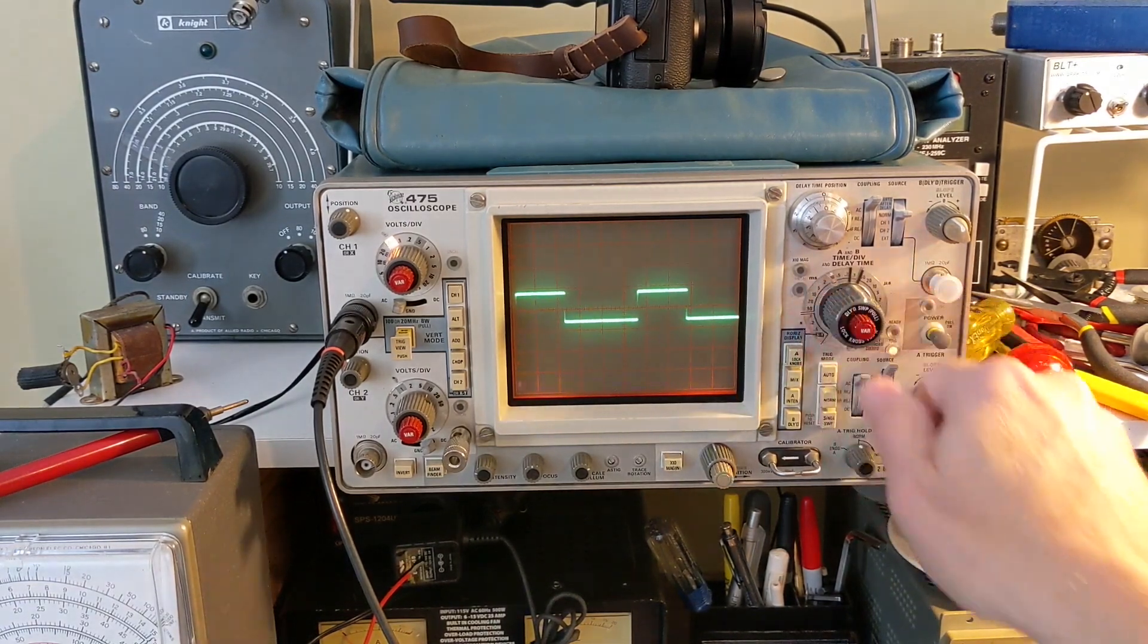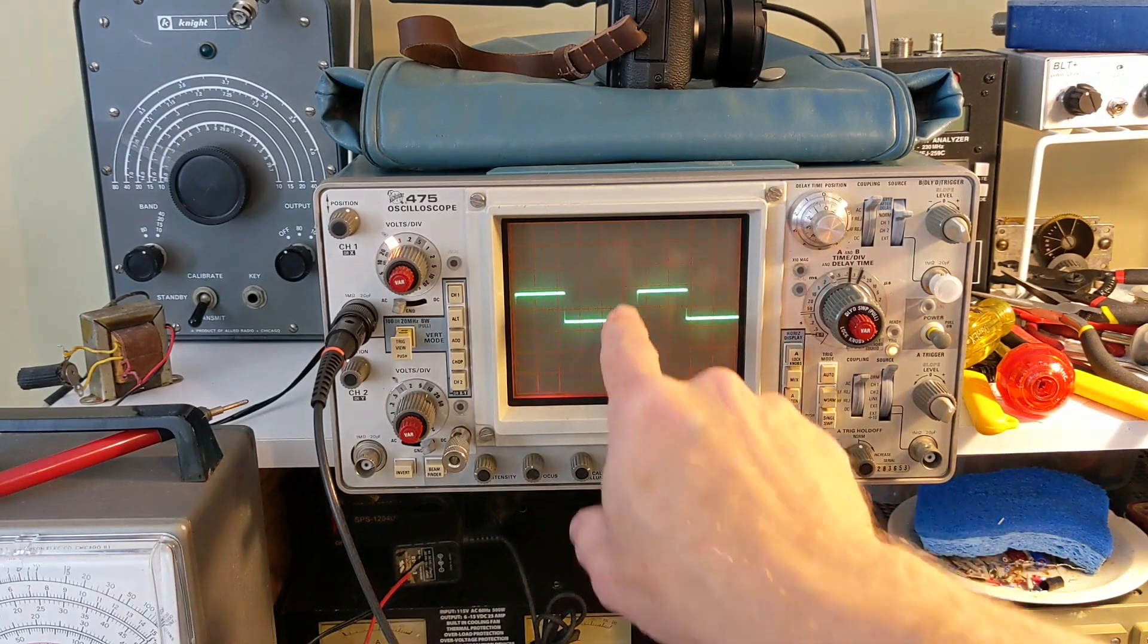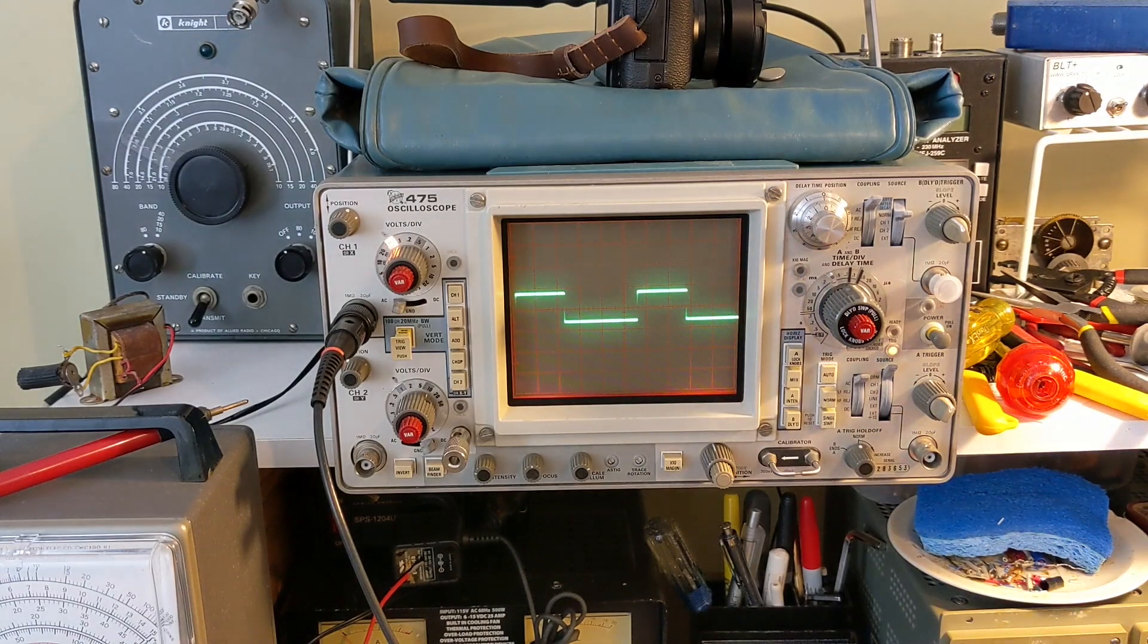If I go to 0.1 divisions, it's actually looking a little bit better. It's still not a very even square wave, but it's got good sharp cutoffs.